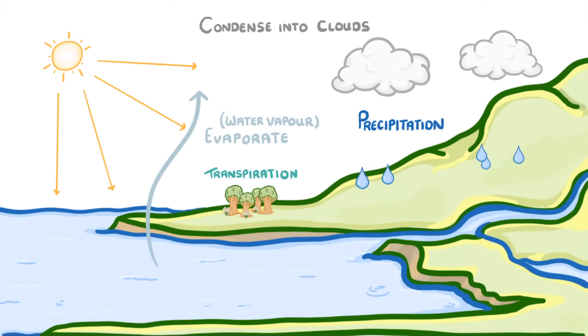So now that the water has fallen back to earth, it could seep into the soil, flow into rivers, or be taken up by plants. And then this whole cycle can repeat all over again.